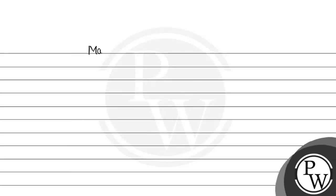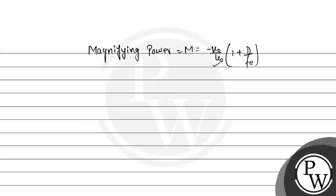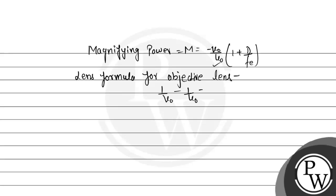First, we need to find the magnifying power. We know that magnifying power is given as M equals minus V0 by U0 into 1 plus D divided by Fe. According to the question, U0 is given. If we find out the value of V0, we will get the magnifying power. To find V0, we will use the lens formula for the objective lens, which is given as 1 upon V0 minus 1 upon U0 equals 1 upon F0.